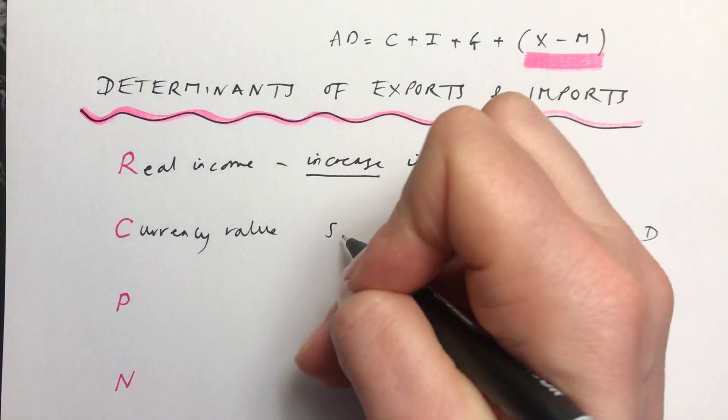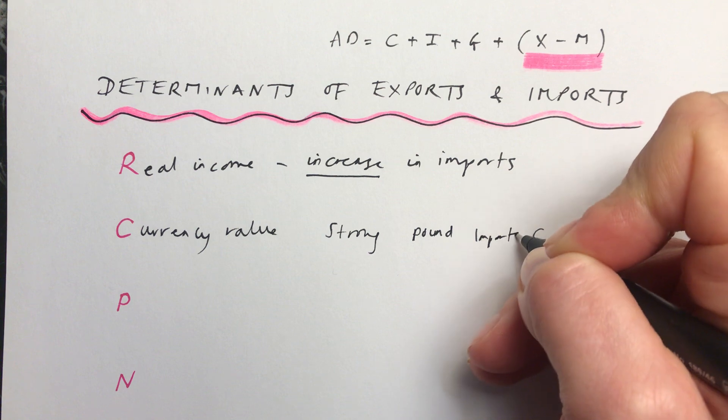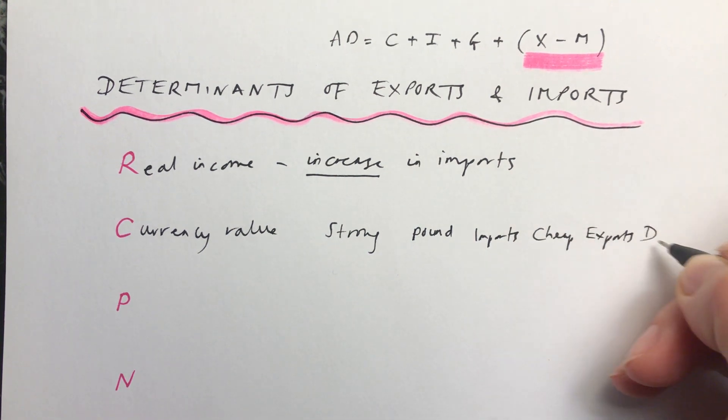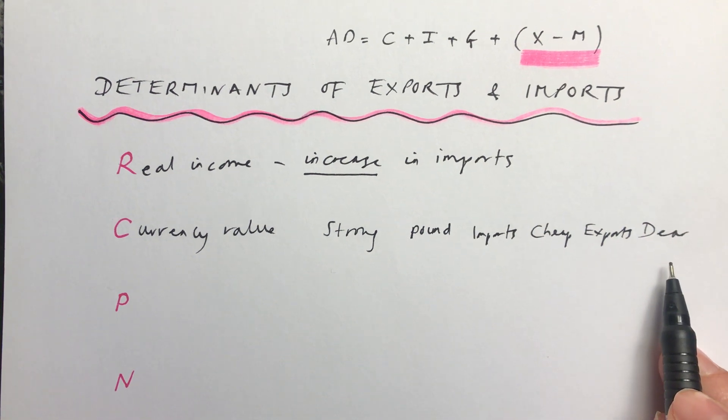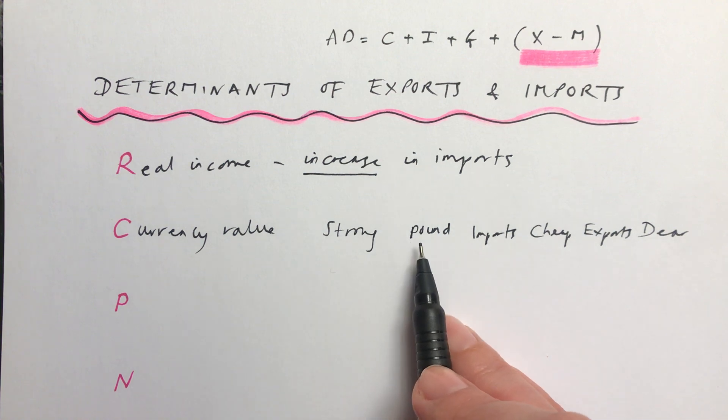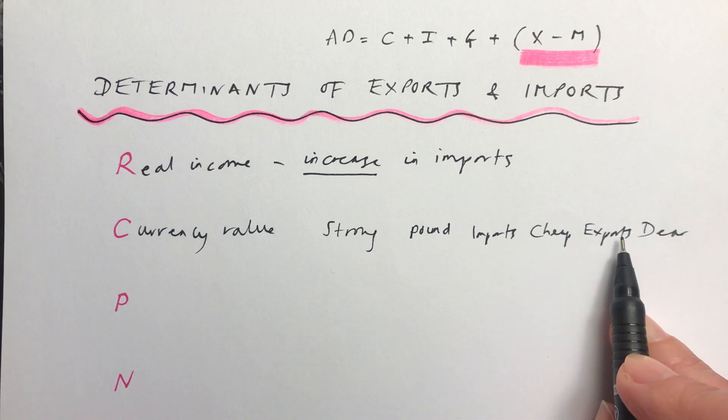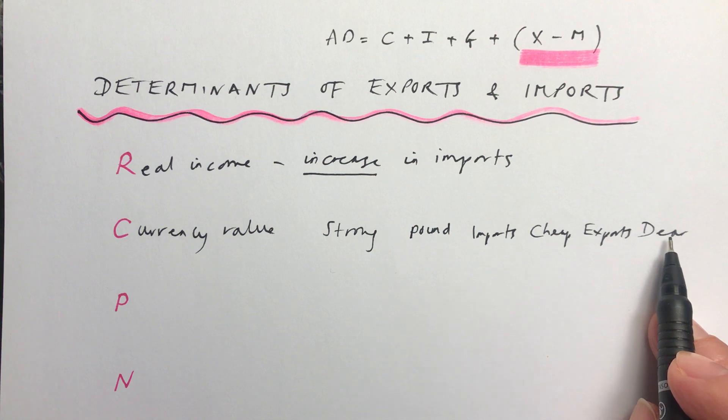SPICED stands for strong pound, imports cheap, exports dear. Dear is an old-fashioned word for expensive. This is how to remember how the value of your currency is going to affect your exports and your imports. If your currency is strong, so that means you can buy a lot of another currency with your own, then that's going to mean that for your country your imports will be cheap because your currency buys lots of someone else's currency. Your exports are going to be expensive for people in other countries.